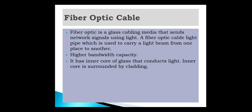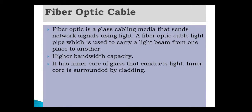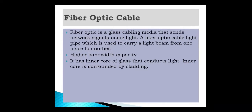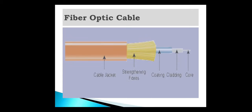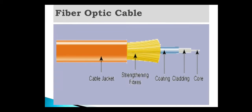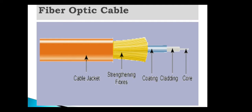Next transmission media is fiber optic cable. It is a glass cabling medium that sends network signals using light. A fiber optic cable's light pipe is used to carry a light beam from one place to another. It has higher bandwidth capacity. The inner core of glass conducts the light, and the inner core is surrounded by cladding. The fiber optic cable contains the core, which transmits data and is made of glass; then cladding, to protect the core and keep it at the center of the cable; then coating; then strengthening fibers to protect the core from external forces; and finally the cable jacket.